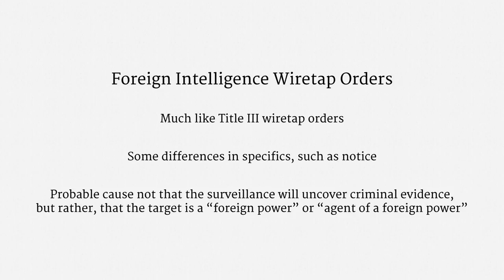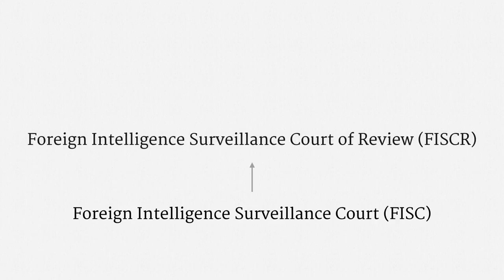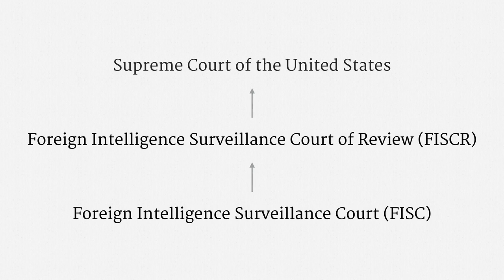Since this is a unique and highly sensitive role for judges, FISA established two new courts. The first is the Foreign Intelligence Surveillance Court, or the FISA Court, or the FISC. It's comprised of district court judges. Appeals from there go to the Foreign Intelligence Surveillance Court of Review, or FISA Court of Review, or FISCR. The judges on that court are drawn from the federal appellate courts. Finally, appeals from the FISCR go to the Supreme Court of the United States.